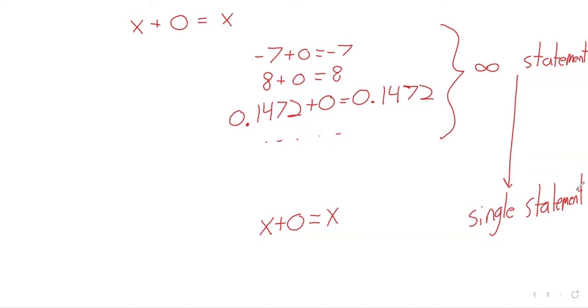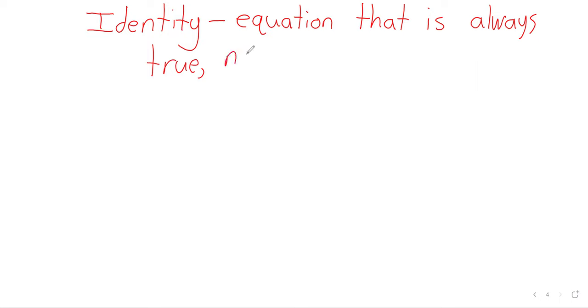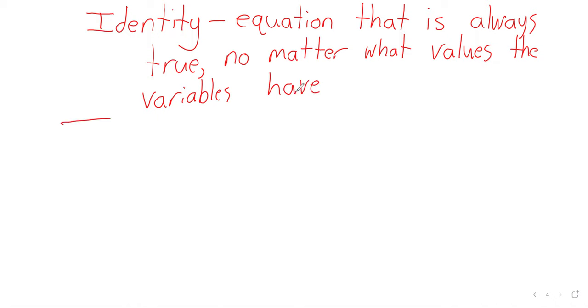And I don't see it in the textbook in this section. It may show up in a later section. But these equalities have a special name. They're called identities. And an identity is an equation that is always true. No matter what values the variables have.